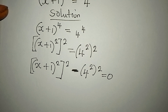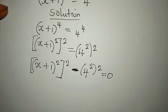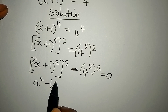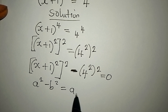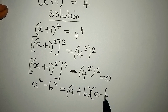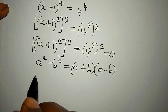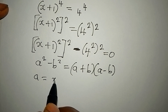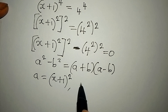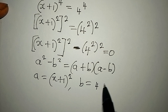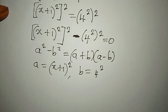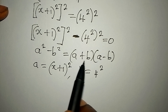Now I can apply the difference of two squares. If you have a squared minus b squared, this is equal to (a+b)(a-b). In our case, a is (x+1) to the power of 2, and b is 4 to the power of 2.